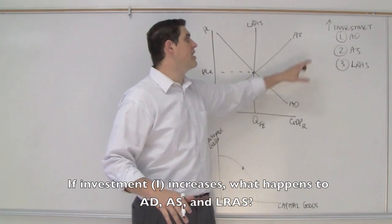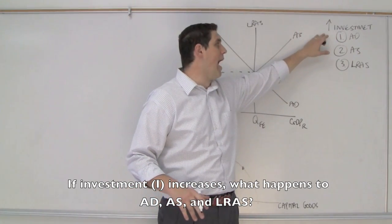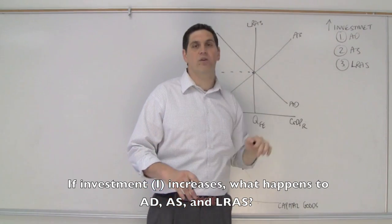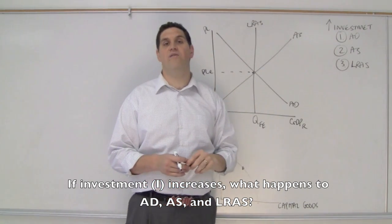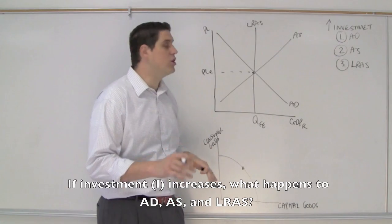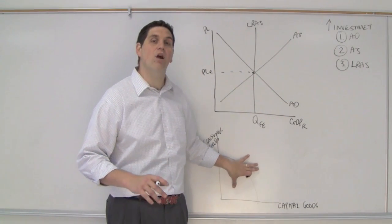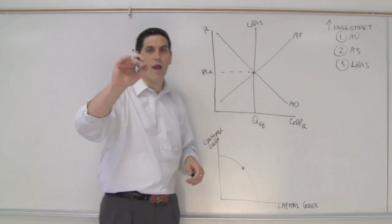Okay, my question is simple. If there's an increase in investment, what's going to happen to aggregate demand, aggregate supply, and eventually long-run aggregate supply? What I want you to do is draw the shift that occurs up here, and see if you can figure out what it looks like down here on the production possibilities curve. I'll get out of your way, good luck.